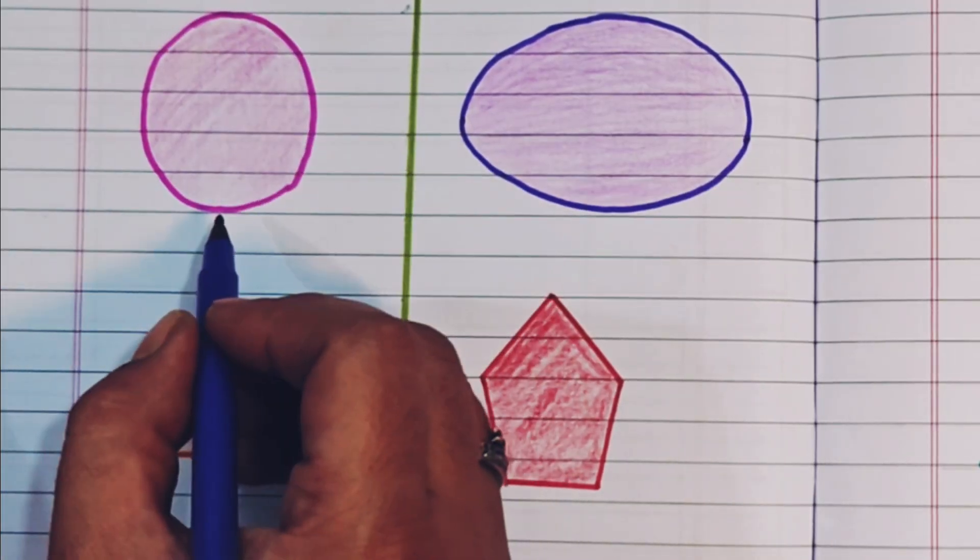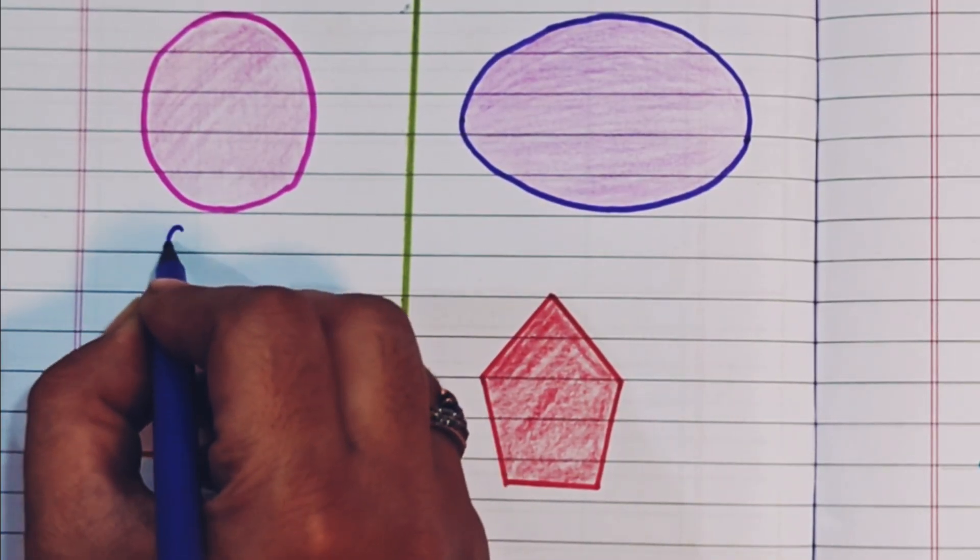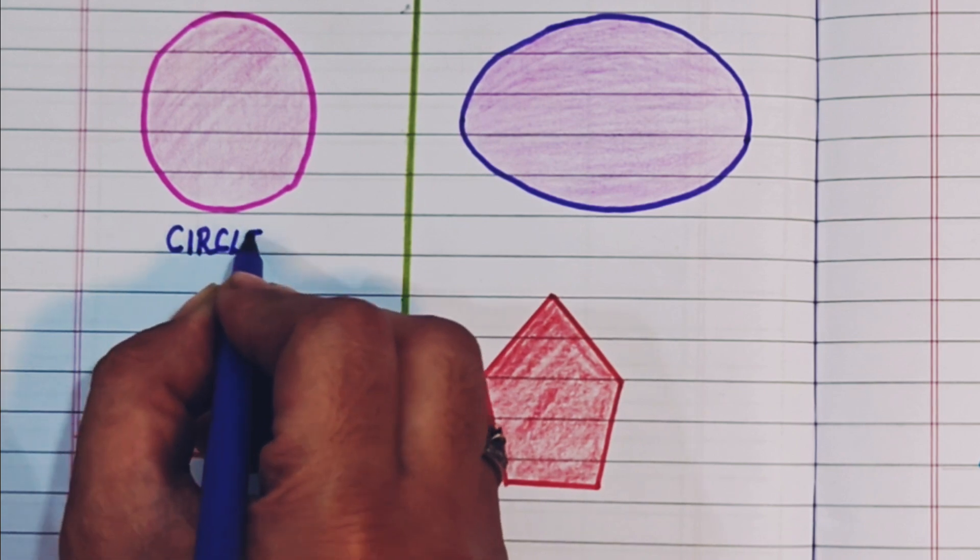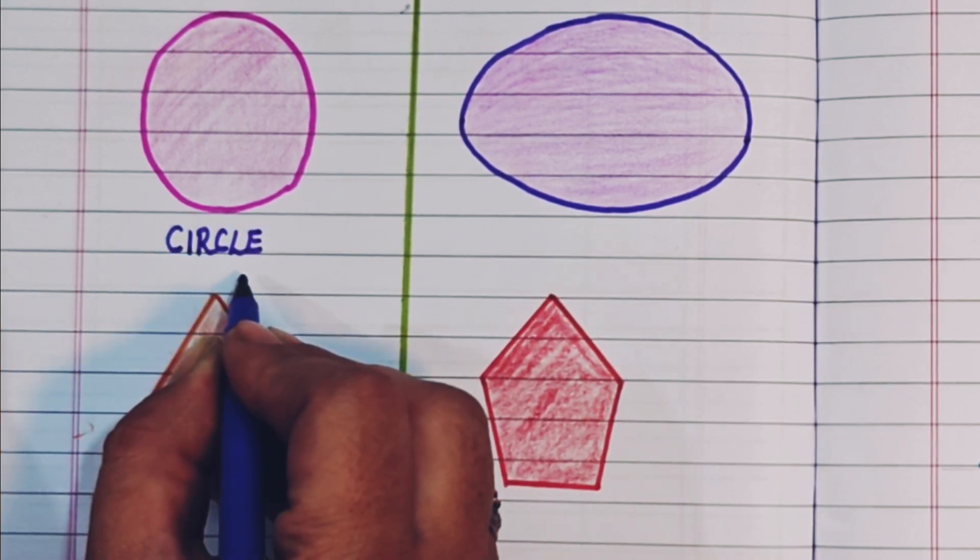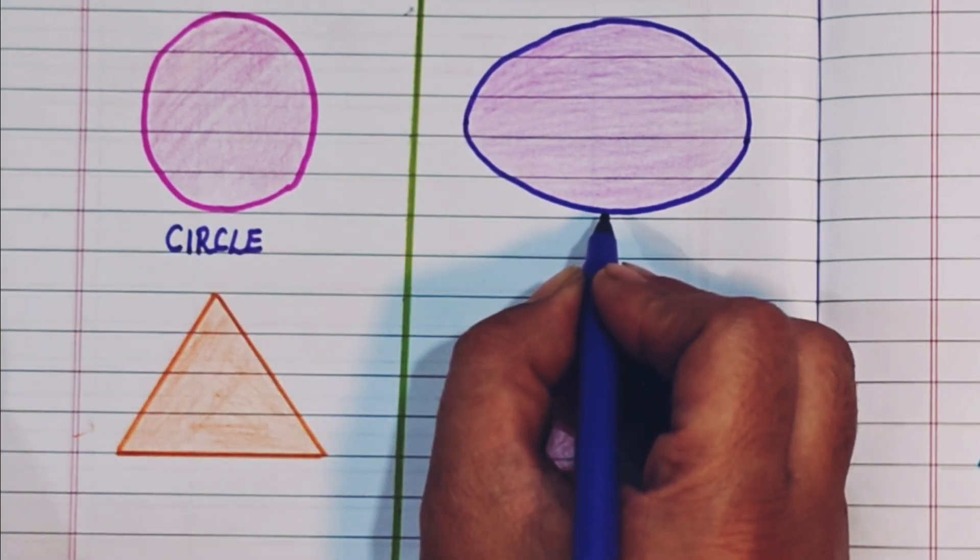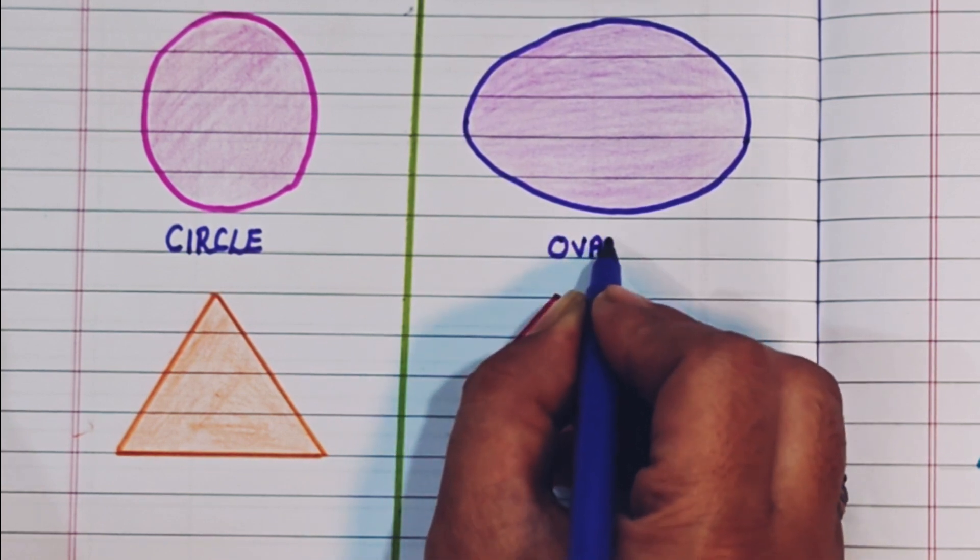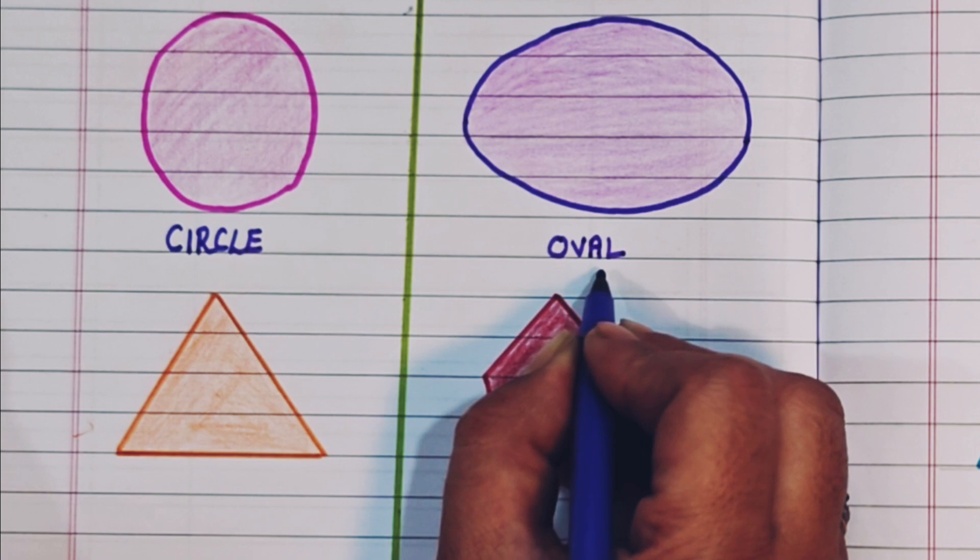This is a circle. C-I-R-C-L-E. Circle. This is an oval. O-V-A-L. Oval shape.